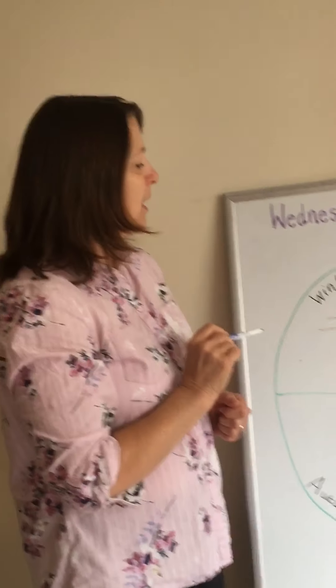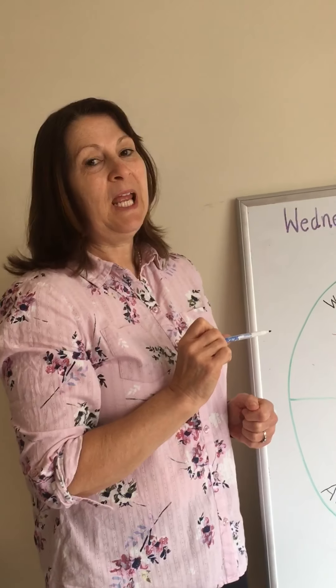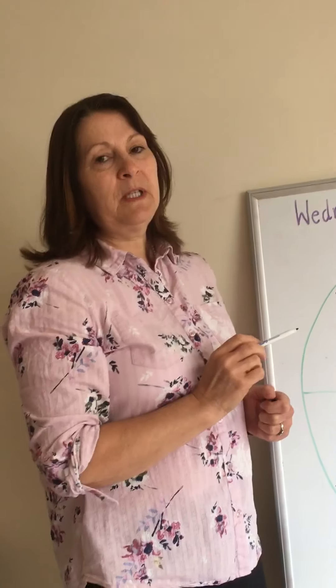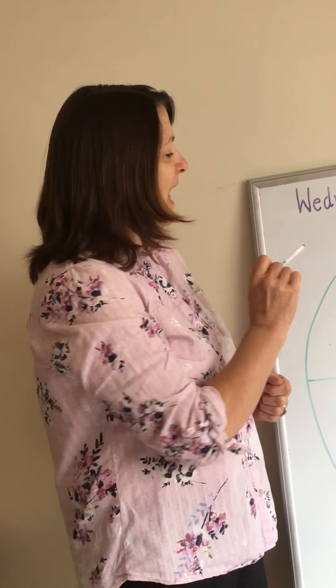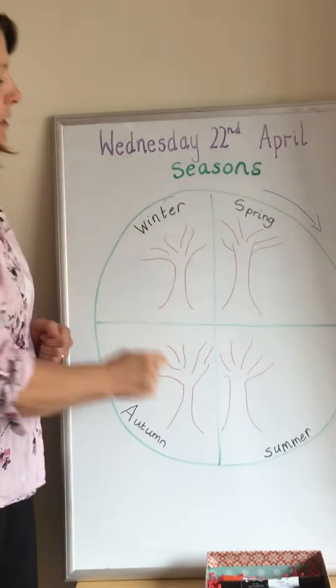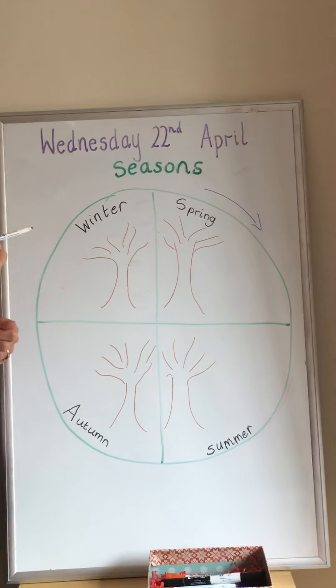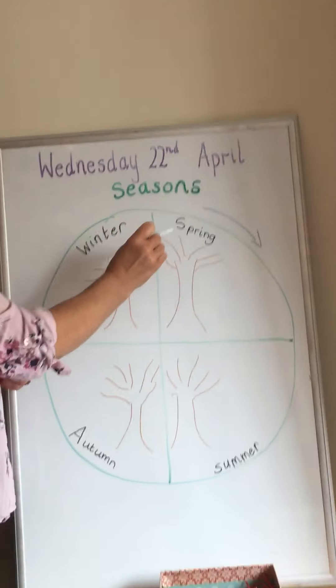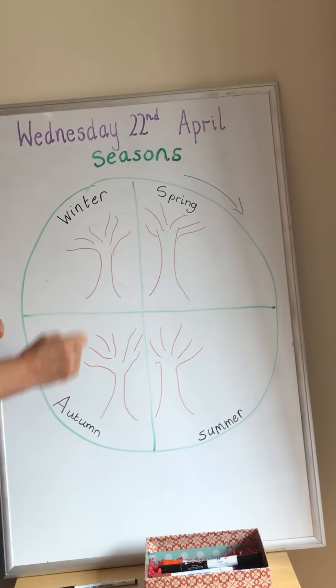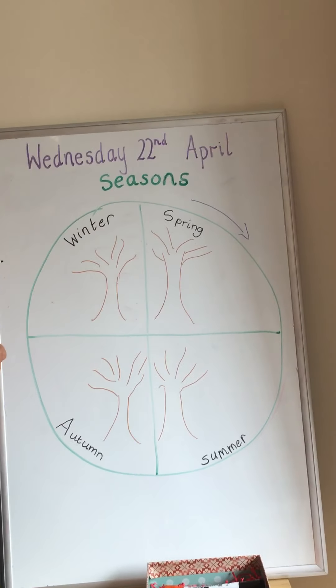Now your task for today is to copy what I've done on this board and you are going to draw a big circle. You can use a plate to draw around or a bowl and you are going to write spring, summer, autumn, winter in your circle.